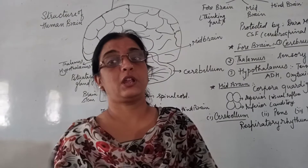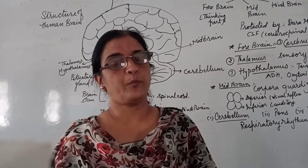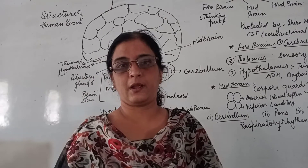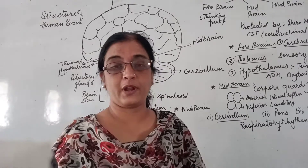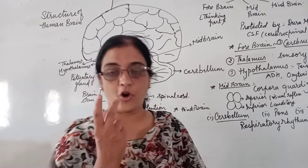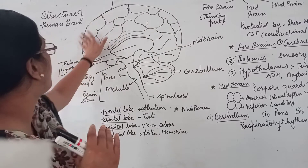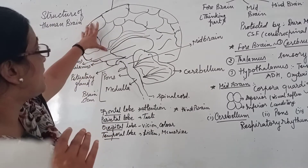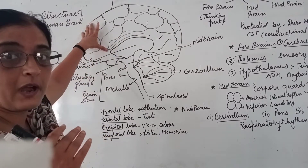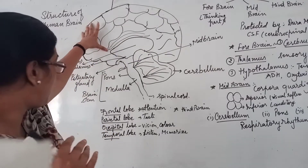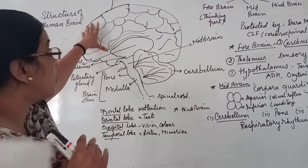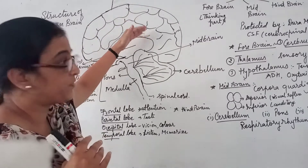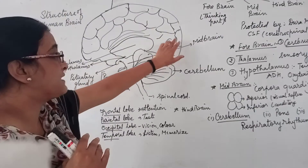Between these layers there is a watery fluid which is called CSF, cerebrospinal fluid. Cerebrospinal fluid is present in these layers and it also protects the brain from shocks and injury.